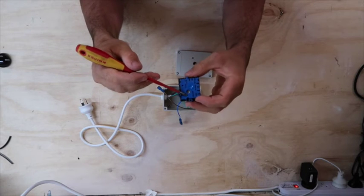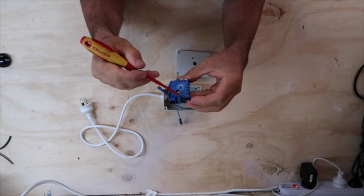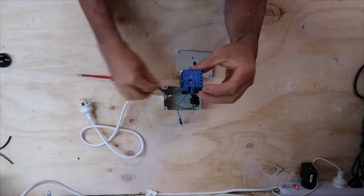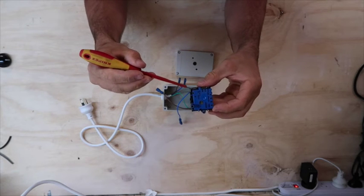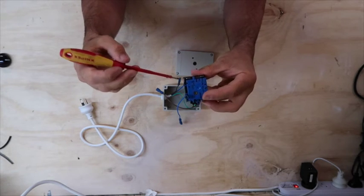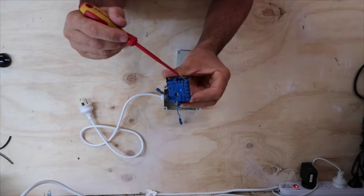This, on the back here, it's got a pilot terminal, which we're not using, if we wanted a light. It's got the phase terminal, which is the power in, which we are using. So the power in comes from the cord. And it's got the neutral terminal, which is just a linking terminal, where the two neutrals go to. And there's the load terminal, which is the brown wire that goes to the powerpoint.